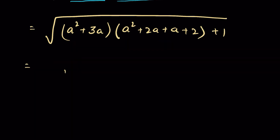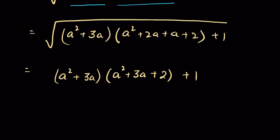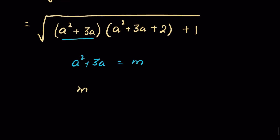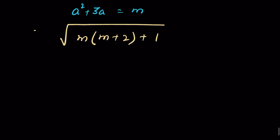So we have a squared plus 3a, times a squared plus 3a plus 2, then plus 1 under square root. Now let's consider a squared plus 3a equals to m. Then we have m times (m plus 2) plus 1 under square root — we substituted this expression for m.